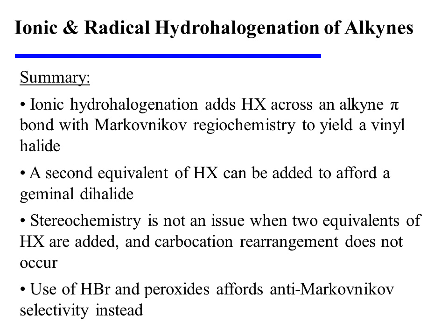In summary, ionic hydrohalogenation adds HX across an alkyne pi bond with Markovnikov regiochemistry to yield a vinyl halide. A second equivalent of HX can be added, affording a geminal dihalide. Stereochemistry is not an issue when two equivalents of HX are added, and carbocation rearrangement does not occur. The use of HBr and peroxides affords anti-Markovnikov selectivity through a radical mechanism.